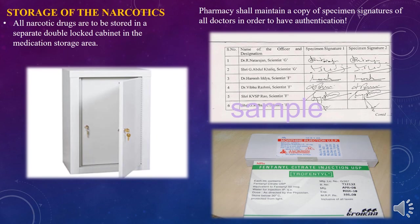Narcotics must always be stored in a double cabinet where both doors have a lock system and two different keys are held by two different persons to prevent misuse. The pharmacy must maintain copies of doctor signatures for authentication whenever a prescription is received — to verify whether it was written by a valid person. Commercially available narcotic drugs like morphine and fentanyl are used for treatment purposes.